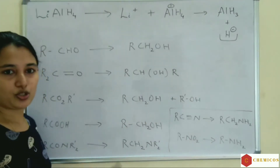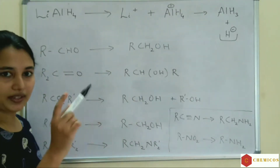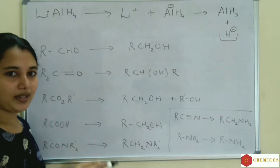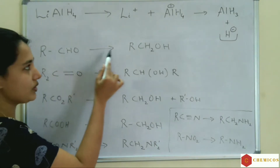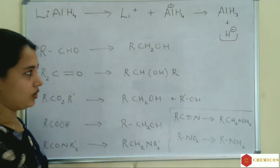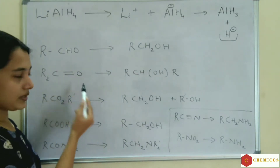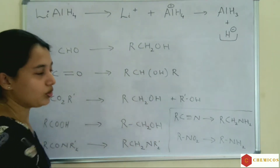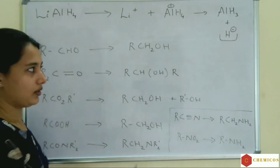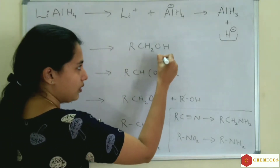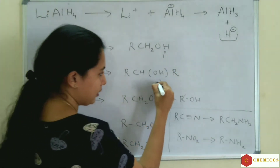Which type of compounds are reduced by lithium aluminum hydride? Aldehydes, ketones, amides, esters, acids, etc. Aldehyde RCHO is reduced to primary alcohol RCH₂OH. Ketone R₂C=O is reduced to secondary alcohol. Aldehyde is reduced to primary alcohol and ketone is reduced to secondary alcohol.